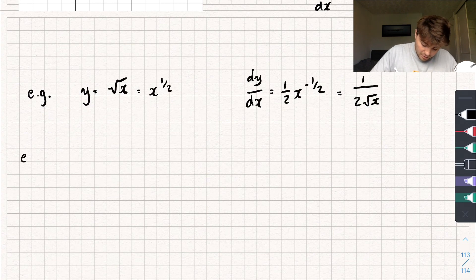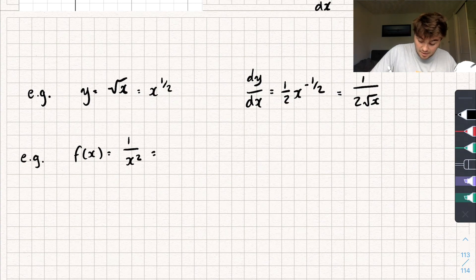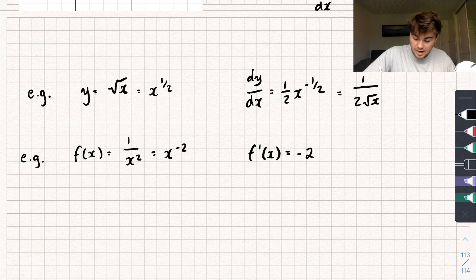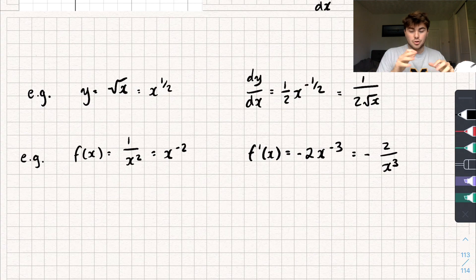Let's have a look at another example. We'll use different notation this time — f of x is equal to one over x squared. Again, we're going to use our laws of indices to say that this is equal to x to the power of negative two. Then from here we can differentiate that, so we get f dash of x is going to be equal to negative two x to the power of negative three. Again, we can use our laws of indices to rewrite this as negative two over x cubed.